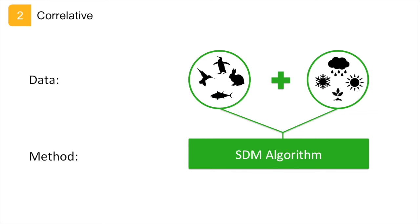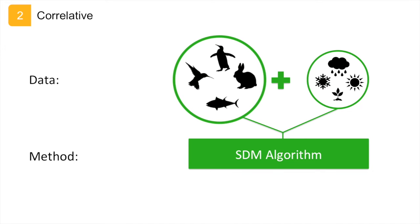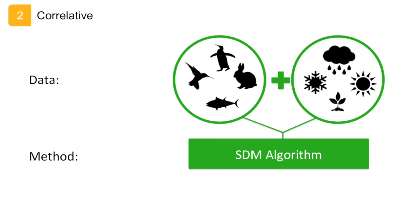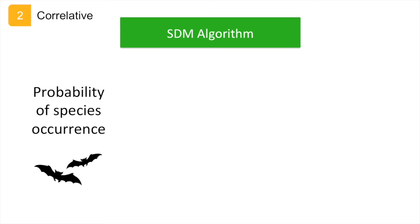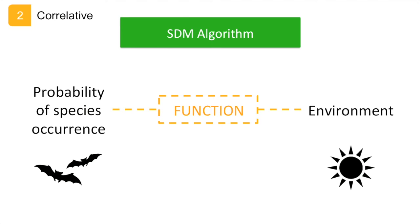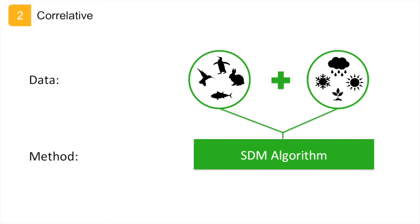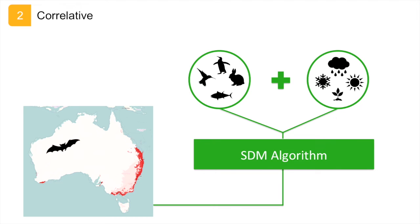So we know something about where species occur, and something about the environmental conditions of those places. The algorithm uses these two types of information to estimate the probability of a species occurring in a place, as some function of the environmental conditions of that place. Once we build the model, we can then project the predicted species distribution geographically on a map. For every point in the landscape, the model estimates the probability of a species occurring there.